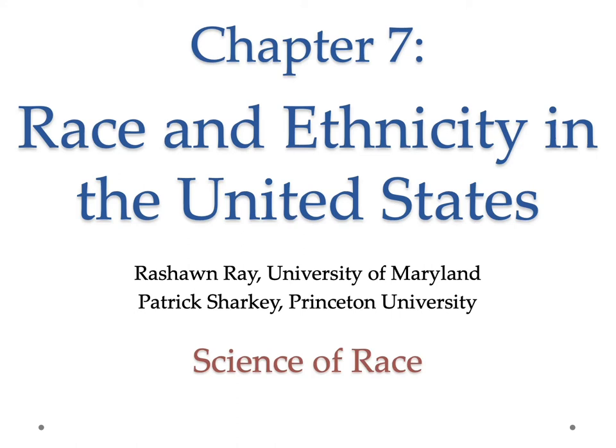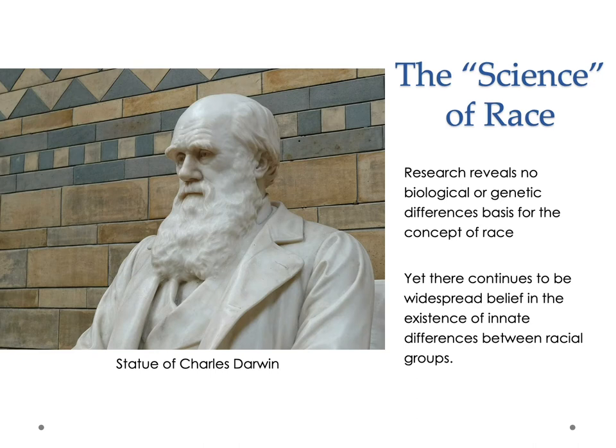In the last lecture on race, we ended with the idea of race as a social construct. I want to spend just a tiny bit more time on the science of race. Research has revealed really no strong biological or genetic differences in the basis of the concept of race, and yet there continues to be a widespread belief in the existence of innate differences between racial groups.